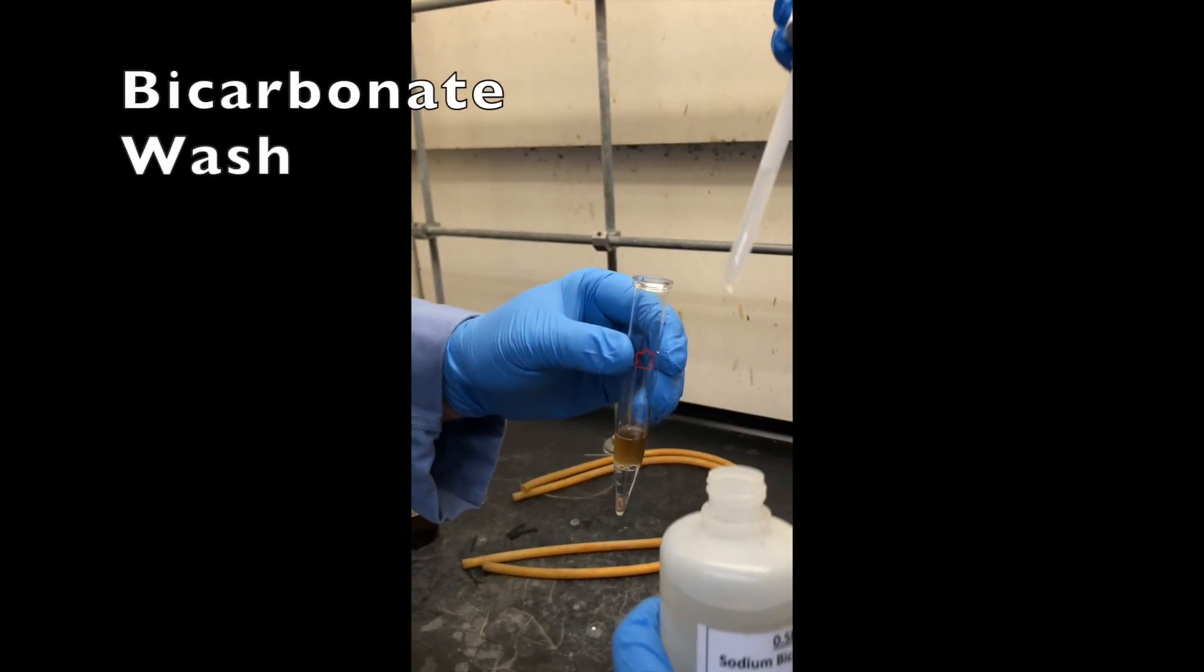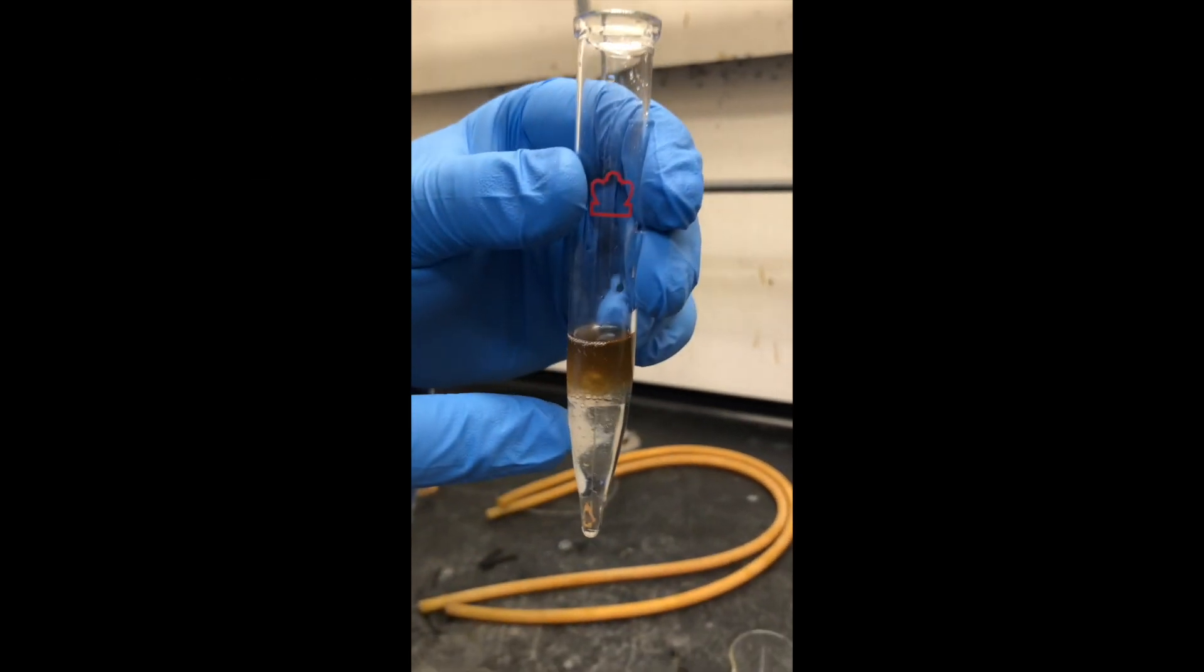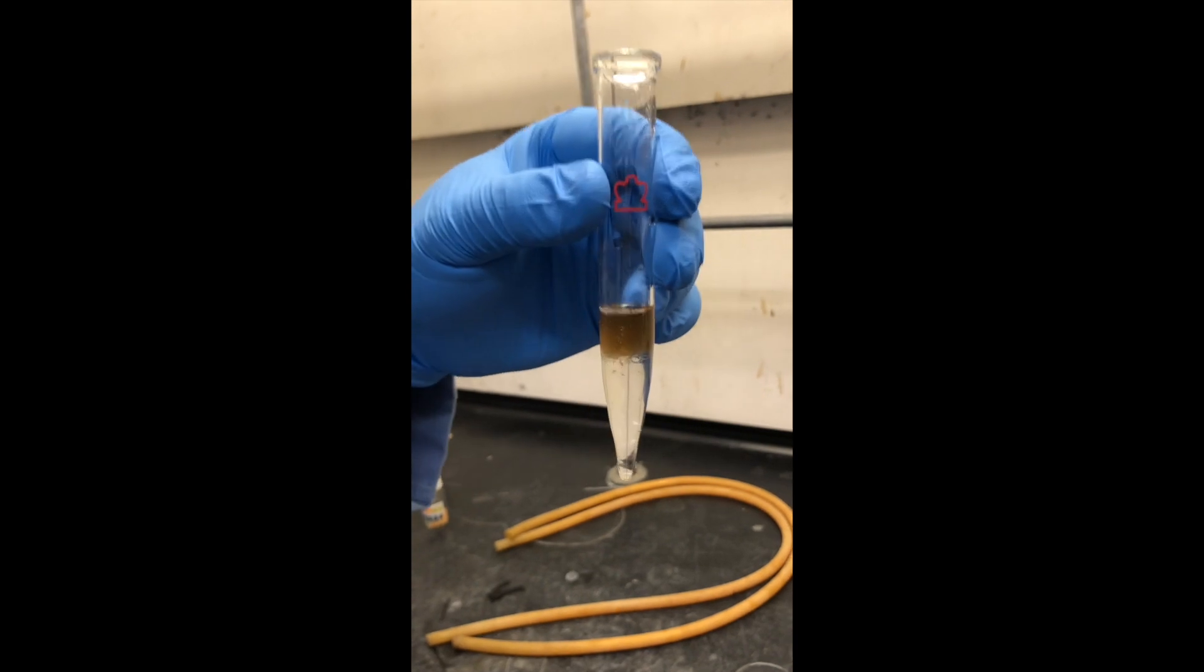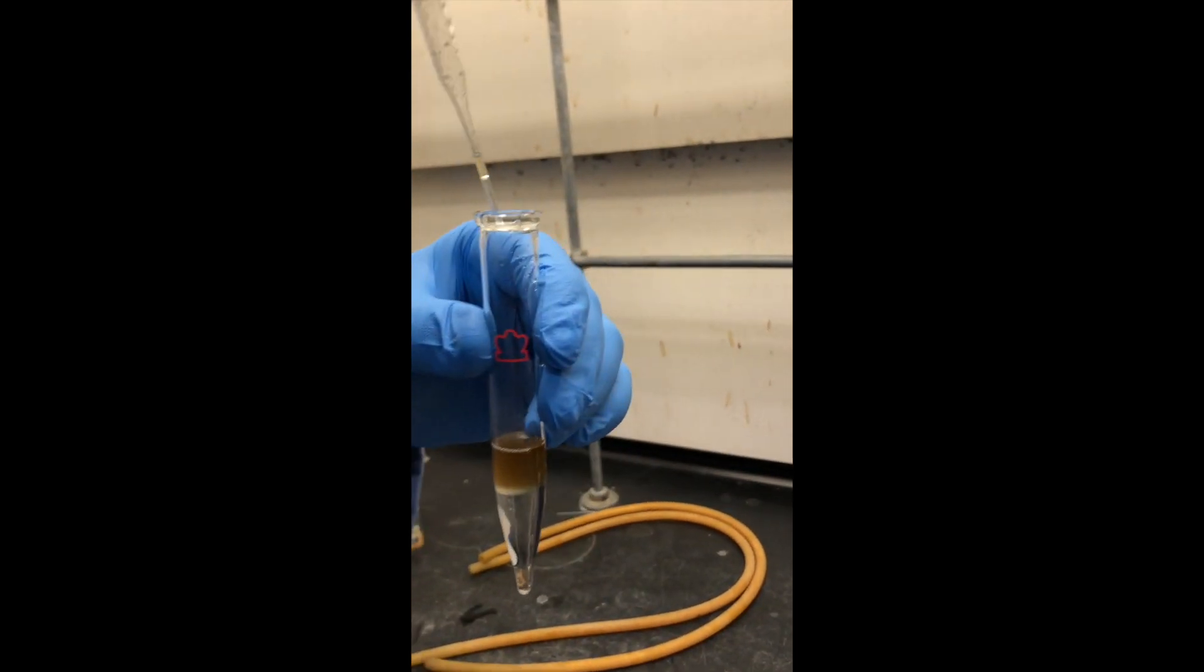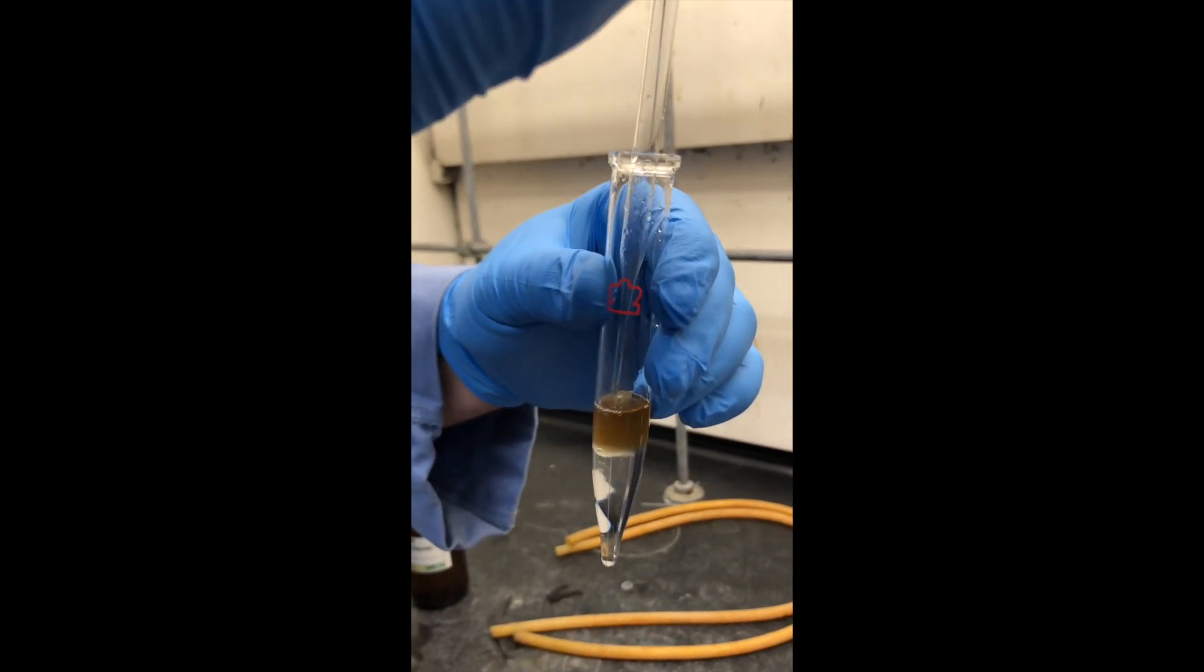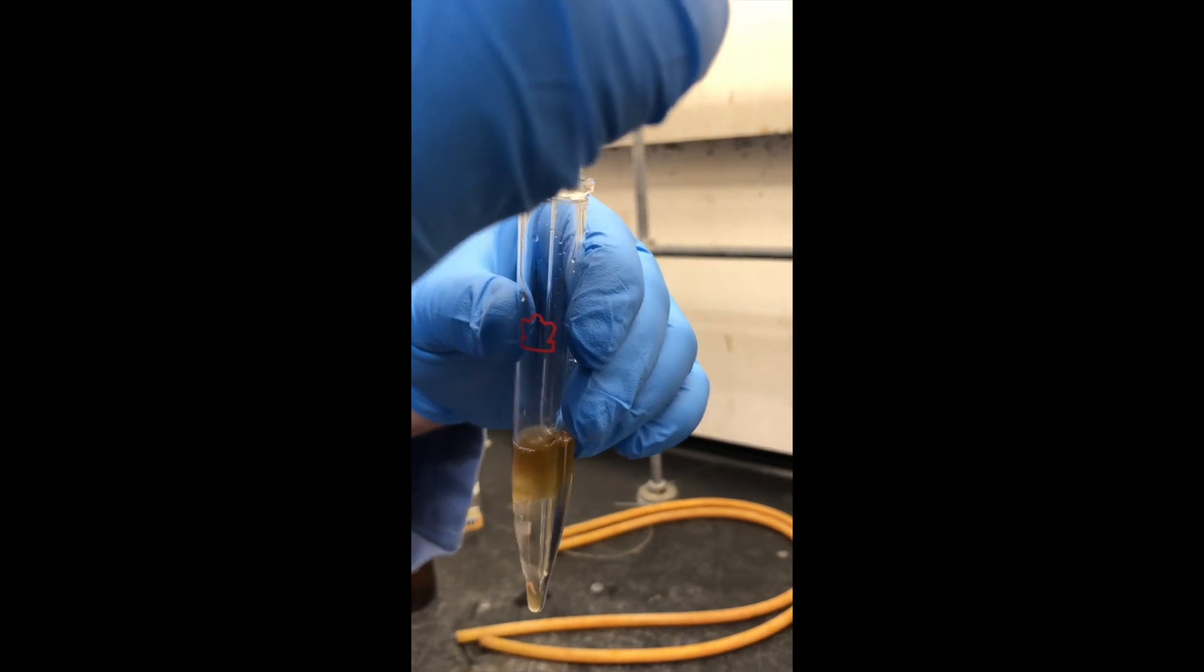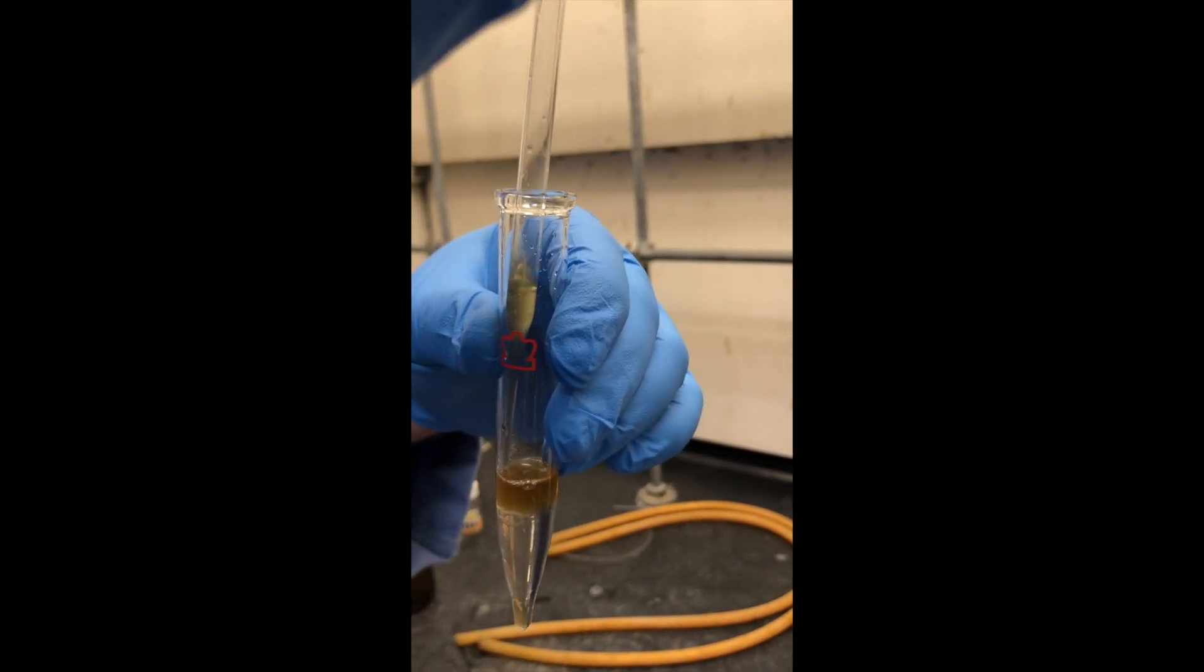So now we're adding the bicarbonate to the reaction mixture and notice that there is a little bit of fizzing. And then to mix, because we're not going to put our thumb over it and shake, we're going to basically draw up one layer and expel it into the other layer so that they can thoroughly mix.